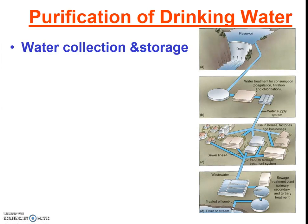The first step, of course, is always to collect the water and store it somewhere. In California, that's often collecting water from a river and storing it behind a dam. But you could also be taking groundwater, and in the future we may be taking ocean water that we desalinate.